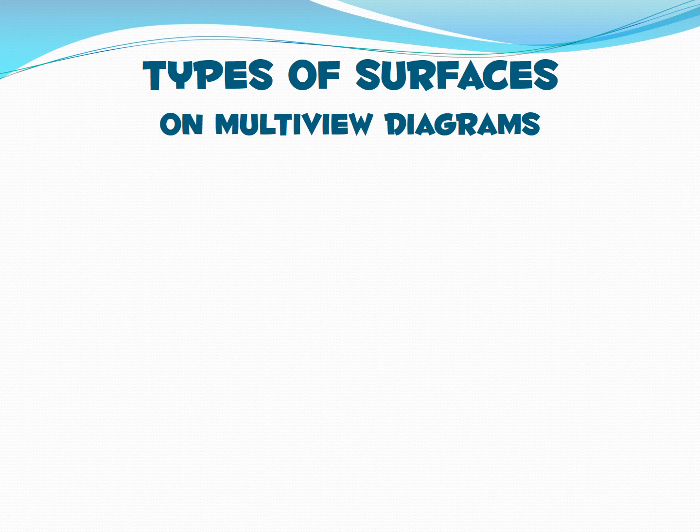In this video, we'll be focusing on creating an isometric drawing based on a given multi-view drawing. To be able to do this, the first thing we need to know are the types of surfaces that may appear on multi-view diagrams.